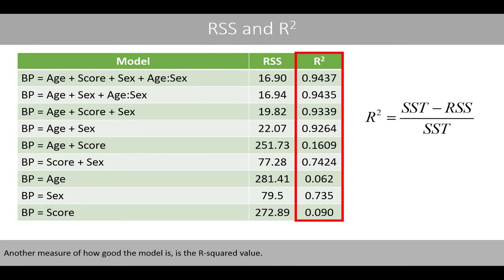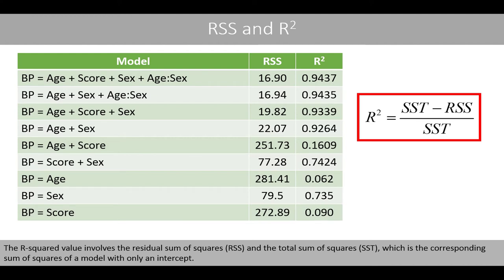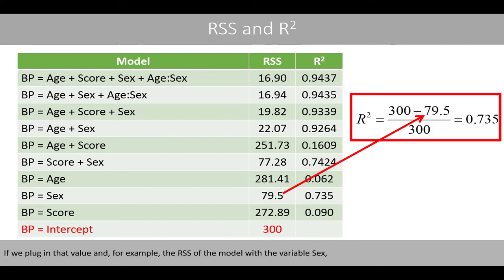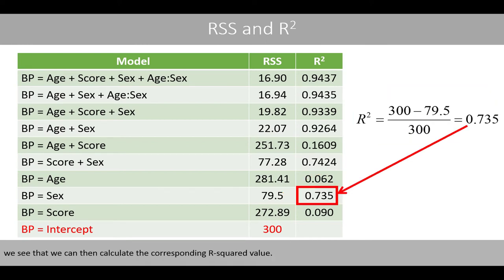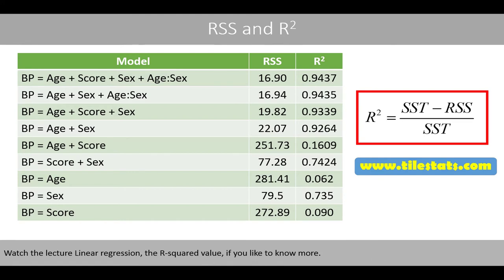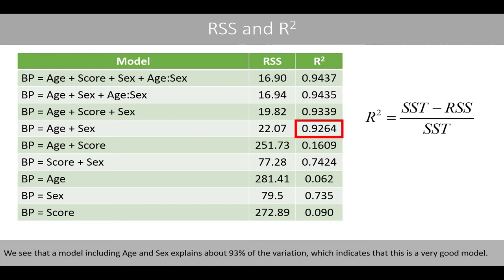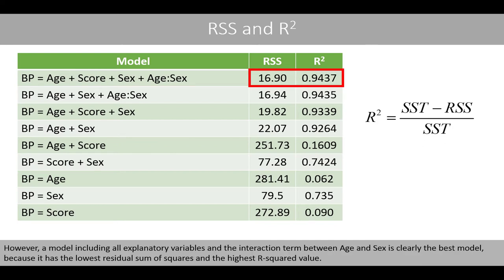Another measure of how good the model is is the R-squared value, which involves the residual sum of squares and the total sum of squares — the corresponding sum of squares of the model with only an intercept. The corresponding residual sum of squares of the intercept-only model is 300. If we plug in, for example, the residual sum of squares of the model with the variable sex, we can calculate the corresponding R-squared value. The R-squared value shows how much of the variation in the systolic blood pressure can be explained by the explanatory variables. The model including age and sex explains about 93% of the variation, which indicates it is a very good model. However, the model including all explanatory variables and the interaction term has the lowest residual sum of squares and the highest R-squared value.